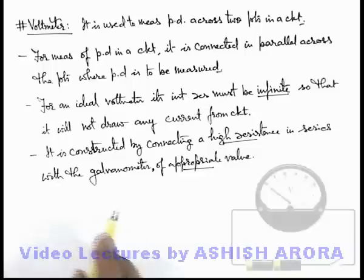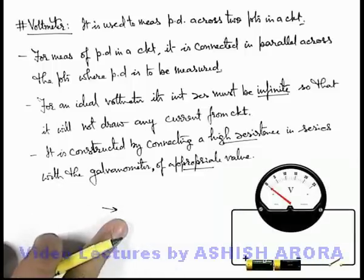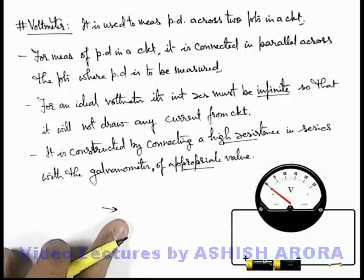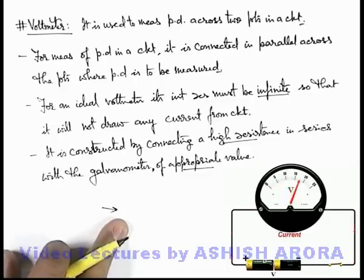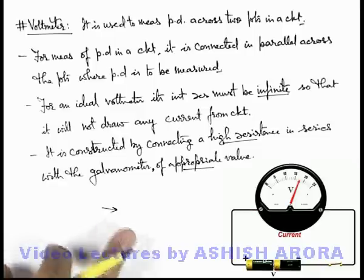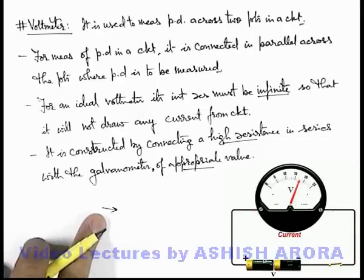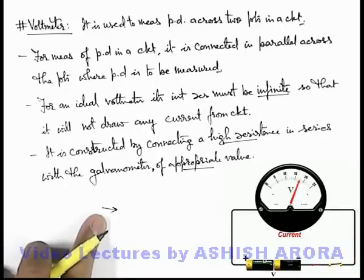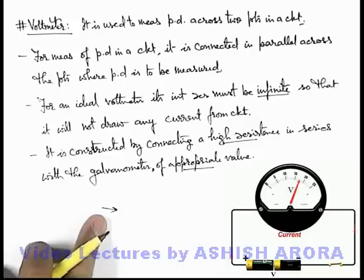A typical voltmeter — here you can see — when connected across a potential difference or a battery and if the switch is closed, it draws a minute, very low value of current, due to which the needle is deflected up to the value of potential difference which we are willing to measure. This is the way the voltmeter is used to measure potential differences. We'll also discuss some specific kind of circuits in which we'll see how a voltmeter can be used for potential difference measurement.